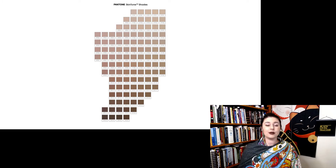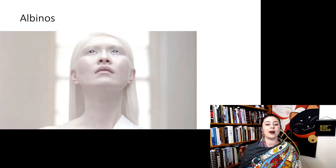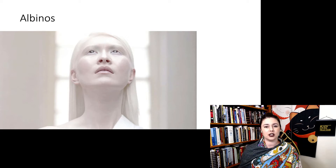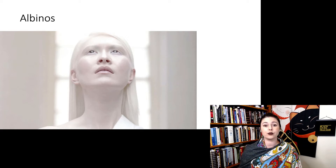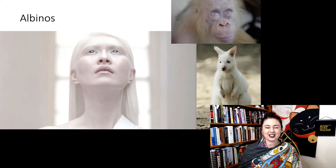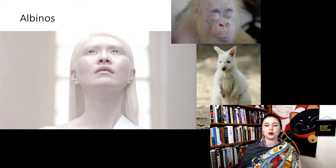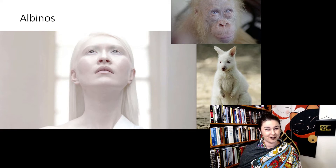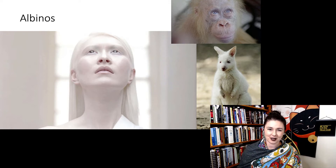There are a couple of extreme skin colors you might notice. Albinos do not produce melanin — they have a disorder where for whatever reason they don't produce melanin. It's generally a genetic disorder, and it's of course not unique to humans; we see albinos in other mammals and reptiles as well. If you are albino, you need to be very careful about sun exposure because you're more susceptible to sunburn.